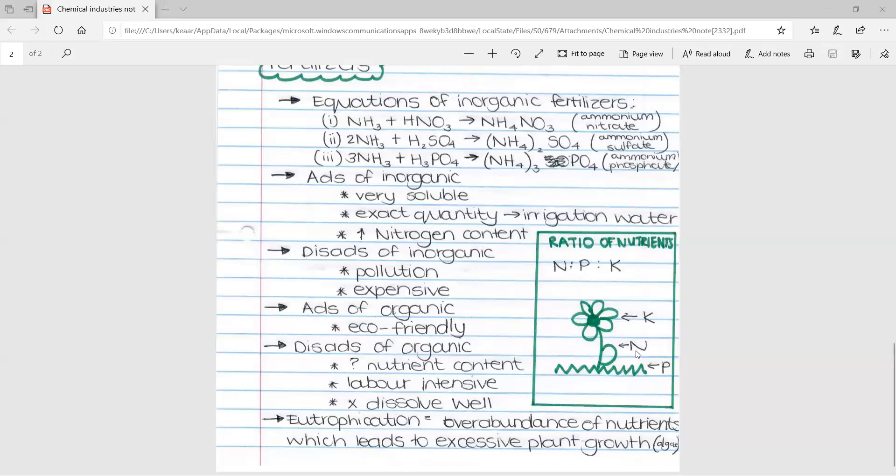Then we move to N. Nitrogen is used for strengthening the leaves and the stems. And then phosphorus is used to strengthen the grass. These types of ratio questions are all about practice and remembering that the ratio is in the form N to P to K.